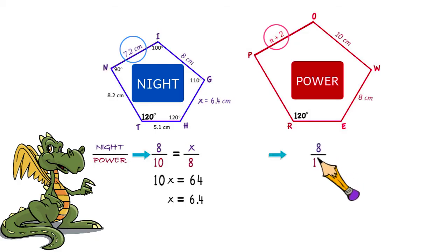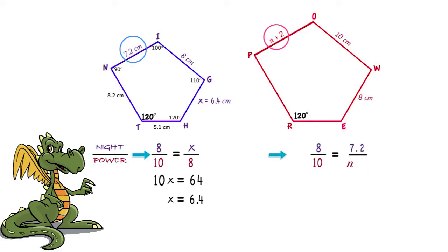And 7.2 and n plus 2 are the measurements of the corresponding sides. Again, we will use cross-multiplying to solve this problem.